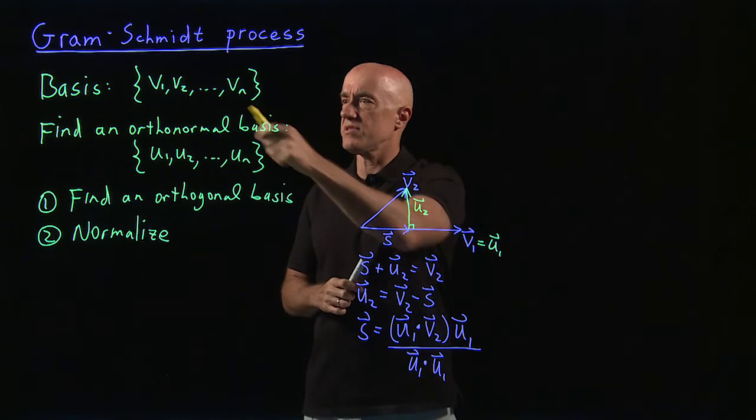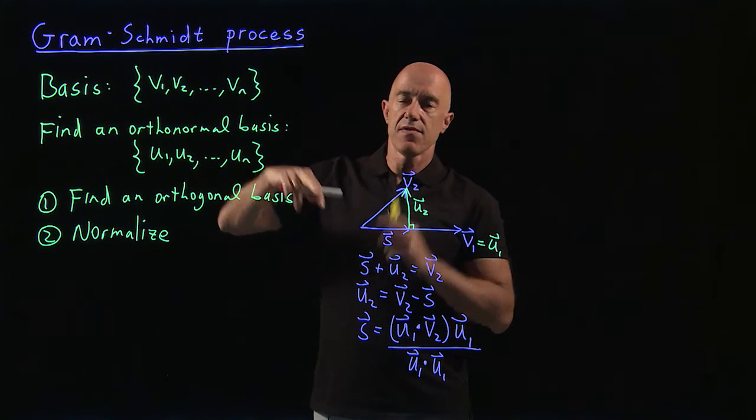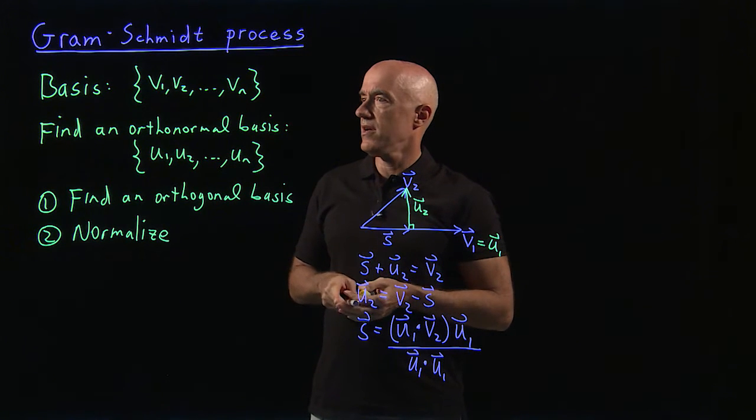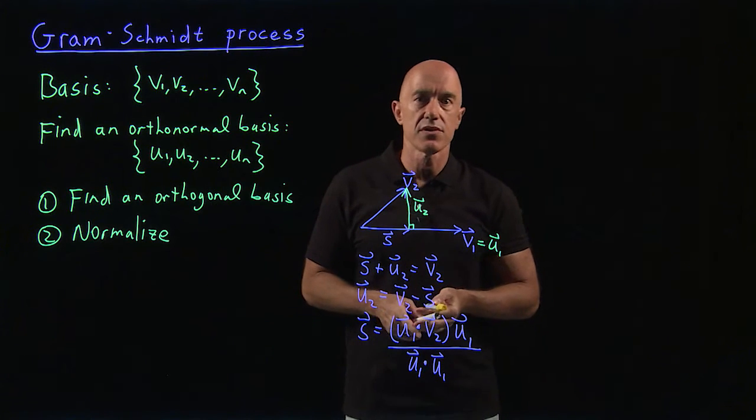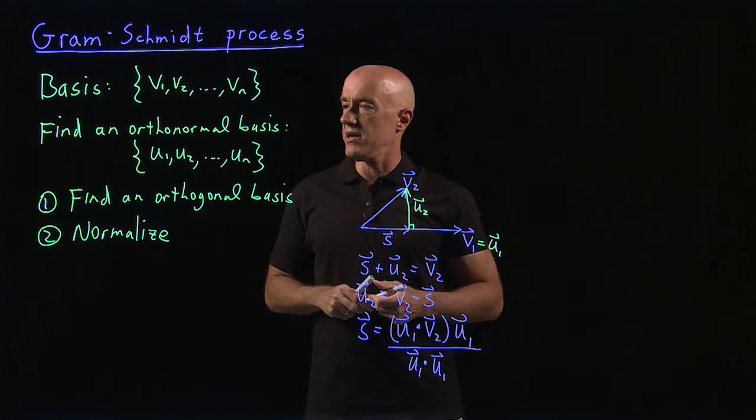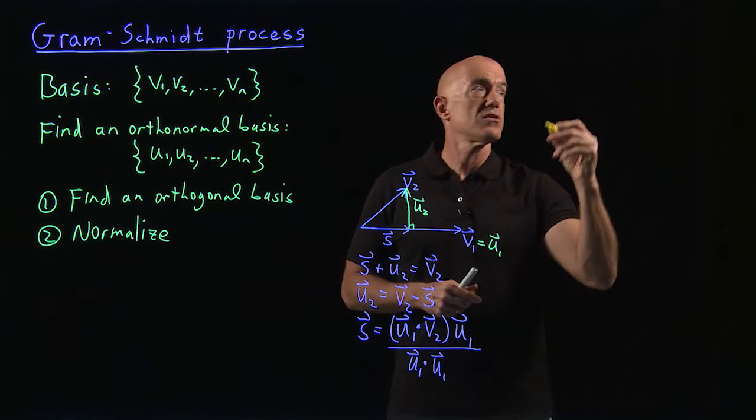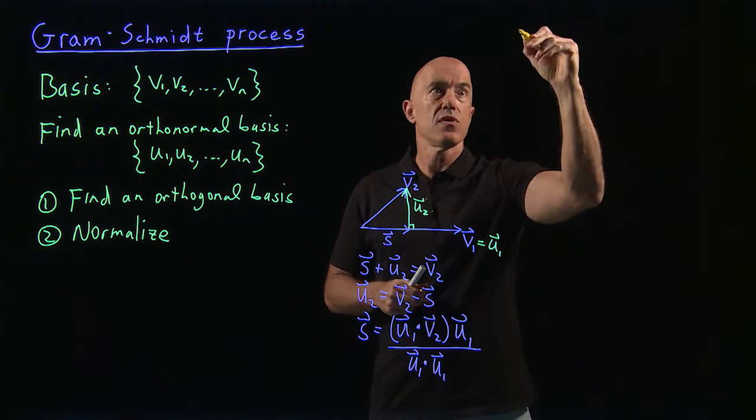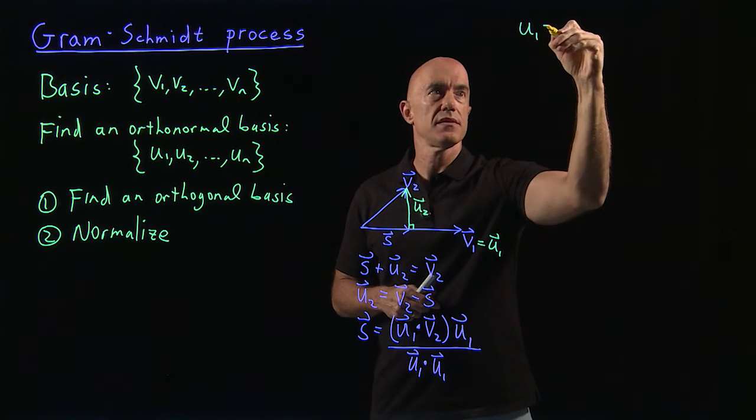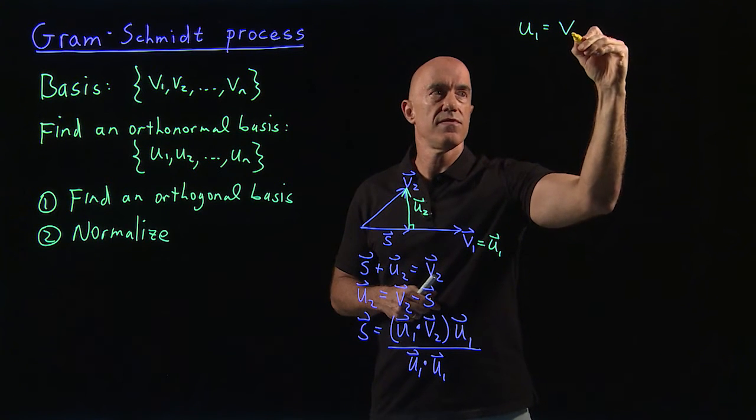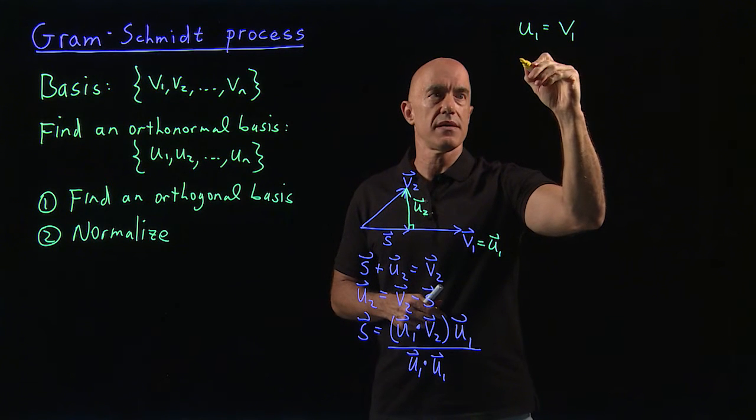Now I want to do this more generally in terms of our column vectors, even though this also works for vectors more general than column vectors. So let's write down the Gram-Schmidt process here. So we're looking for the orthonormal basis. So we're going to start with U1. The first orthonormal basis is going to be V1.